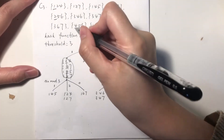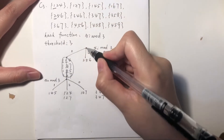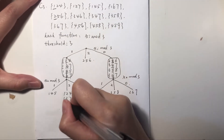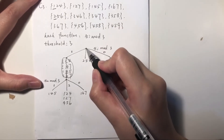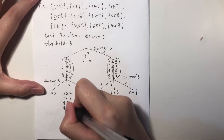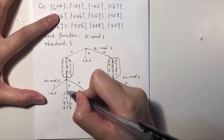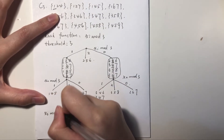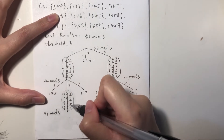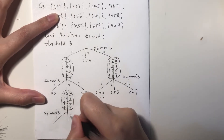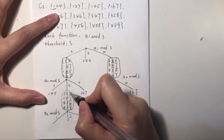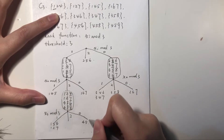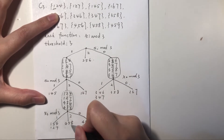The next candidate is {4,5,6}: starting from the root, 4 mod 3 = 1, so we go to this branch; then 5 mod 3 = 2, so it ends up here. Next candidate {4,5,8}: 4 goes here, 5 goes here. Now this node exceeds the threshold again, so we split it using the third hash function x3 mod 3 — checking the third element. There are three branches: {4,5,7} goes to one branch, {4,5,6} where 6 mod 3 = 0 goes here, and {4,5,8} where 8 mod 3 = 2 goes here.